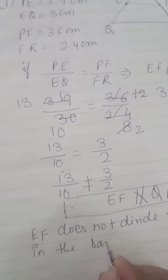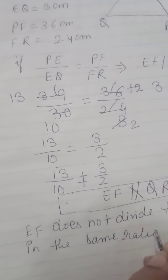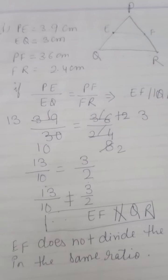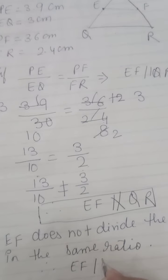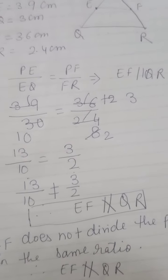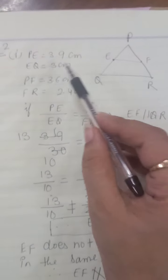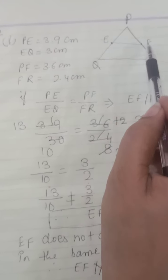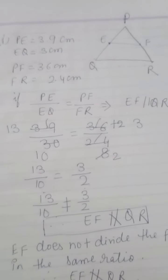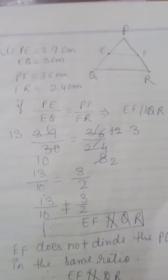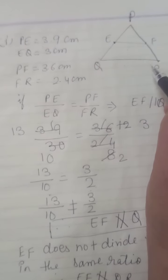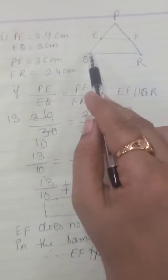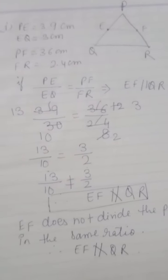So we can see: all the information was given, and E and F are two points intersecting PQ and PR. We had to show whether EF is parallel to QR. EF can be parallel to QR only when the ratios are equal. We checked the ratios and they were not equal. Therefore these two points do not divide the sides in equal ratio. Now moving forward.